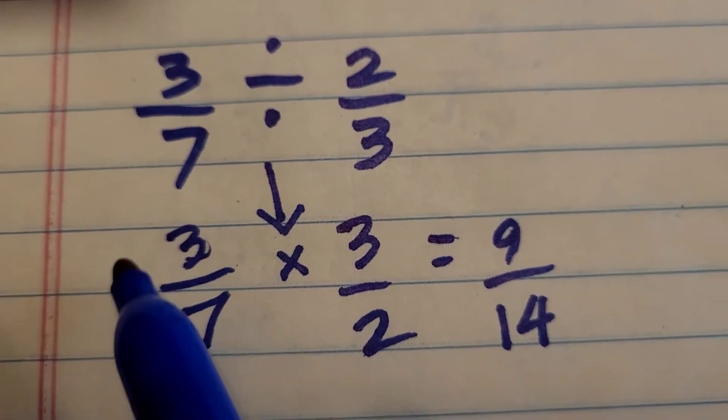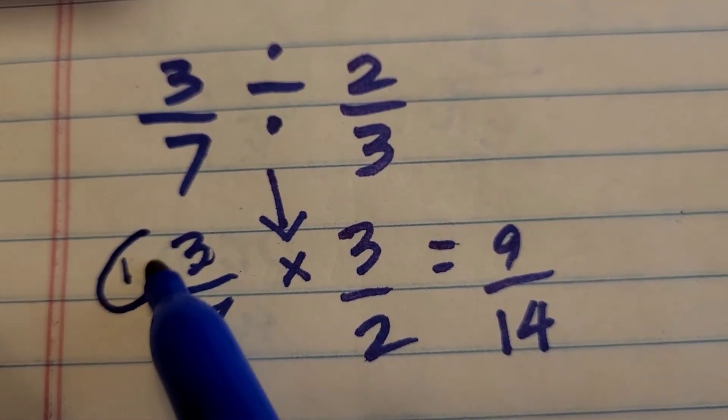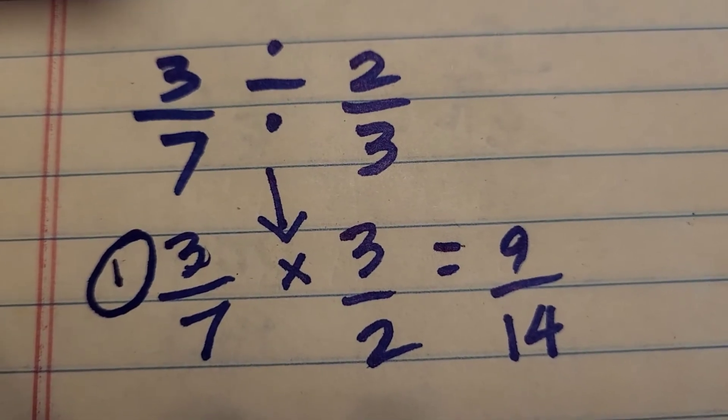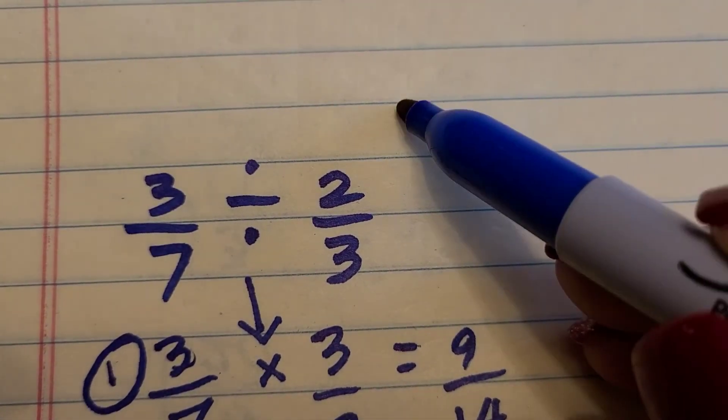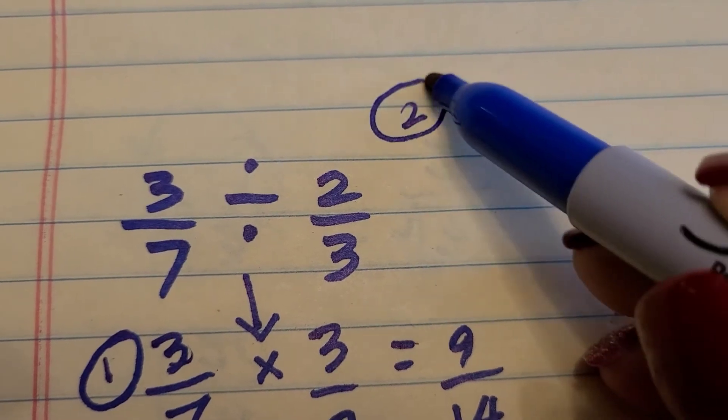Now this was the traditional method here. Let's go ahead and take a look at a secondary method, which is a cool trick. I'm just going to put this method up here. I'll circle it with the 2 as our second method.